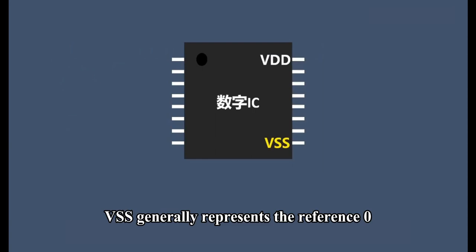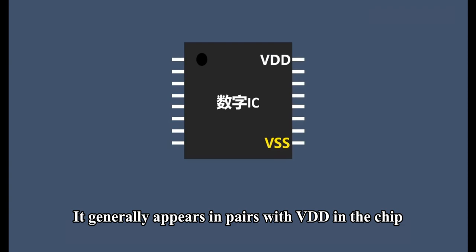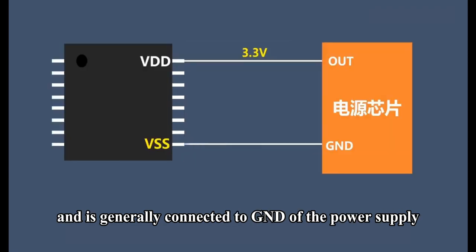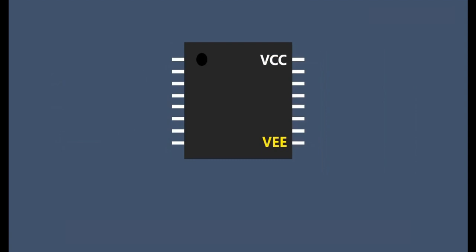VSS generally represents the reference zero-level pin of digital chip power supply. It generally appears in pairs with VDD in the chip and is generally connected to GND of the power supply.